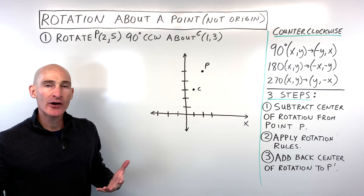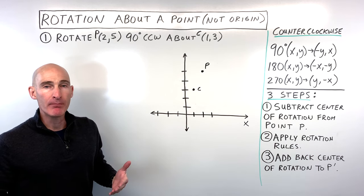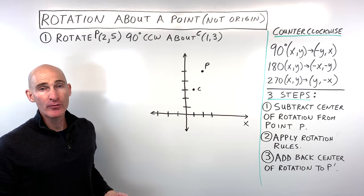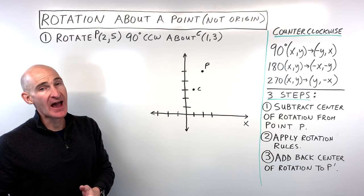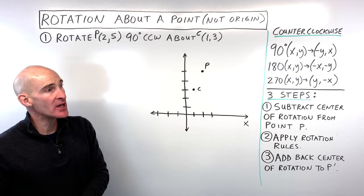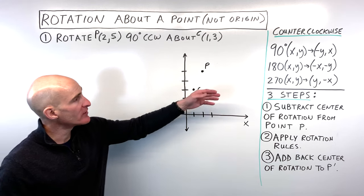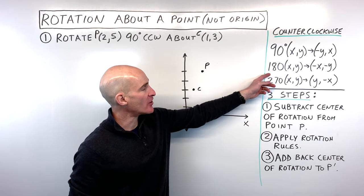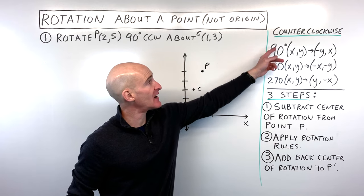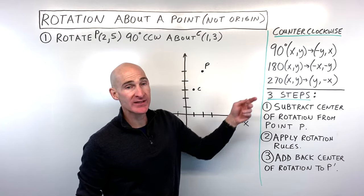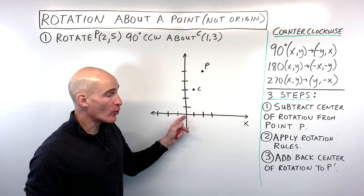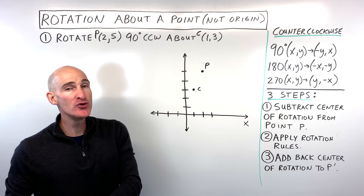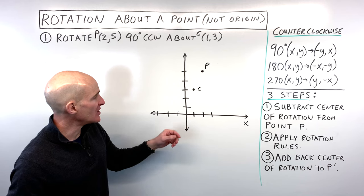In this lesson we're going to talk about how to rotate a point about another point which is not the origin. You learned previously how to rotate 90, 180, and 270 degrees counterclockwise about the origin, but now we're going to have a new center of rotation.